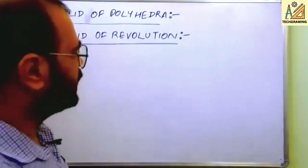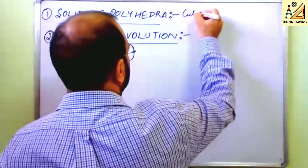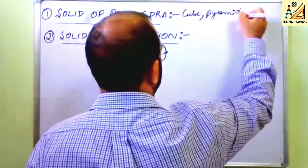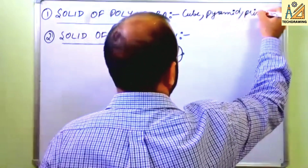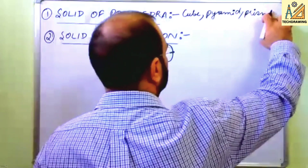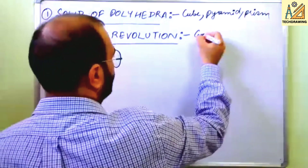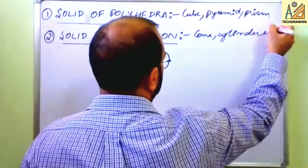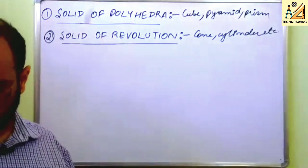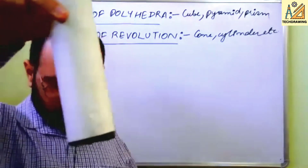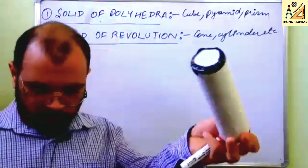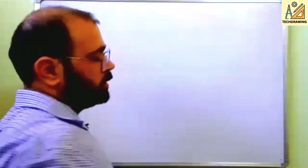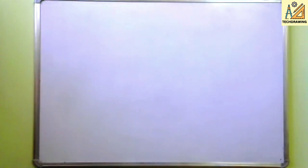So solids of polyhedra include cube, pyramid, and prism. Solids of revolution include cone and cylinder. There is one more classification — based on the base and top of the solid.